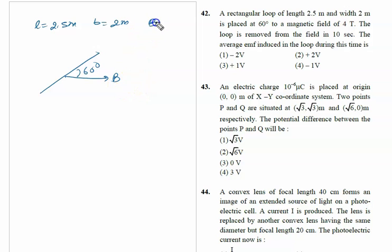The magnetic field value is B equal to 4 Tesla. The loop was removed from the field in 10 seconds. We need to find the average EMF induced in the loop during this time.